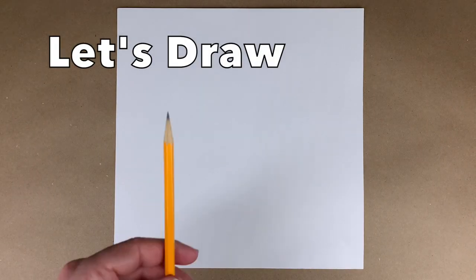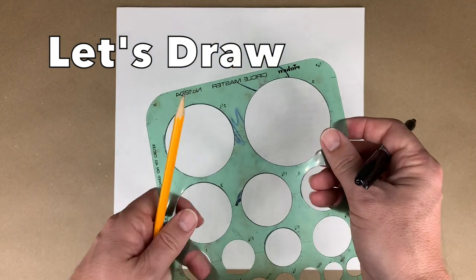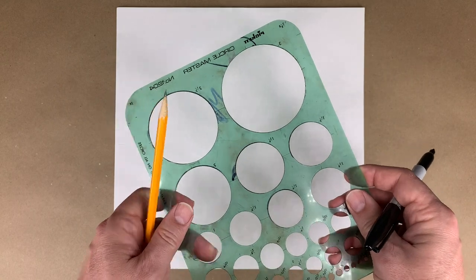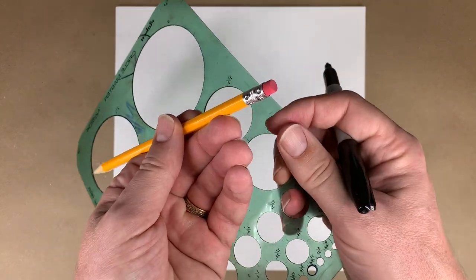Let's get started. Get your paper and your pencil and your circle stencil. I will be drawing with black marker so you guys can see better on the camera, but if you draw in pencil, you can erase it.